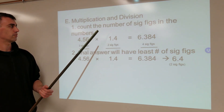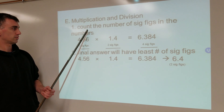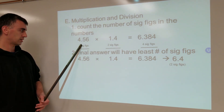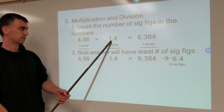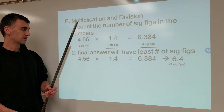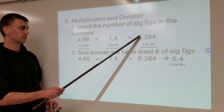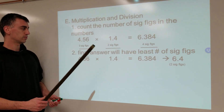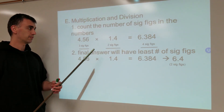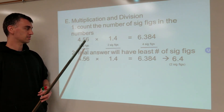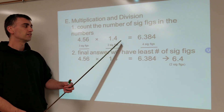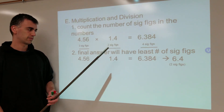With multiplication and division, you count the number of significant figures. In this example, you realize three significant figures and two significant figures, and your raw calculator output has four. You're going to take this raw calculator number and round it — just as a chain is always as strong as its weakest link, the final number is only as good as the numbers that went into calculating it. If this one is only two significant figures, then the final answer should only be two significant figures.